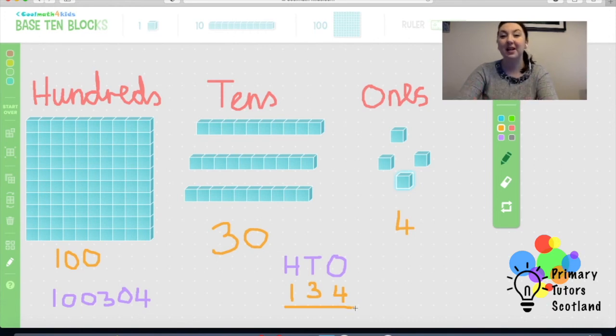But when we partition it or when we split it, it's also called the expanded form, this is what we get. We get 100, we get a 30 and we get a 4. So that is us partitioning our numbers and then this is us contracting it.